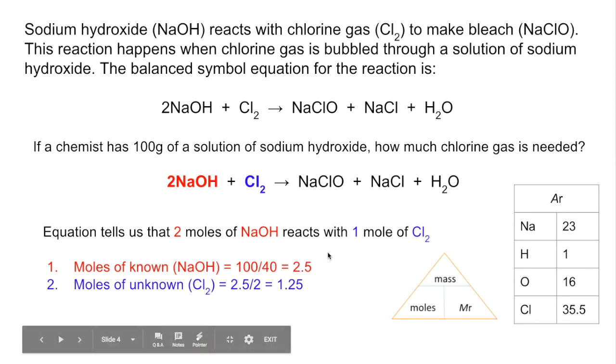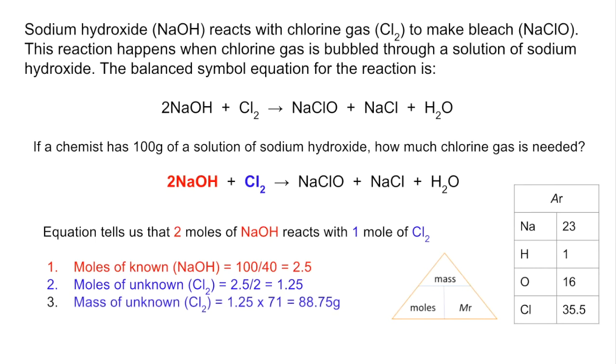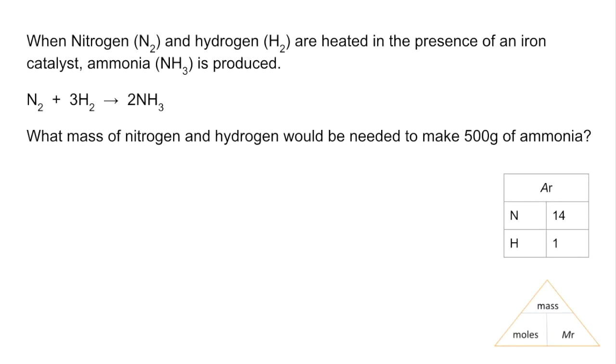Now all we need to do is convert that into grams by multiplying by the Mr. So the mass of chlorine is 1.25 multiplied by its Mr of 71 = 88.75 grams. Final one now - again, pause the video when you've processed the information, have a go, and then we'll go through the answer together.